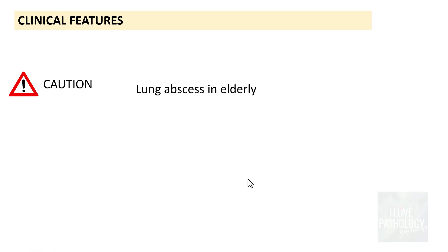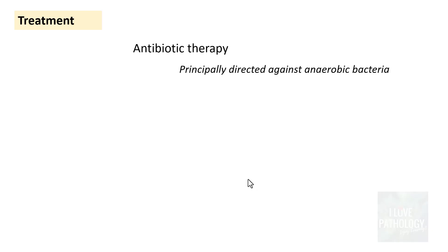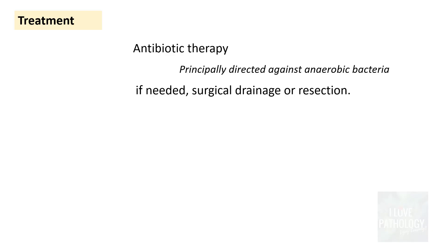One important point: if you find a lung abscess in elderly patients, you must rule out underlying cancer, because lung abscess can be seen in 10 to 15 percent of lung cancers, particularly squamous cell carcinoma of the lung. Treatment is primarily antibiotic therapy directed against anaerobic bacteria. Surgical drainage or resection of the affected lung may be needed if multiple. Despite treatment, prognosis carries a mortality rate of around 5 to 10 percent.